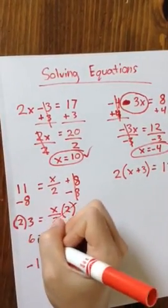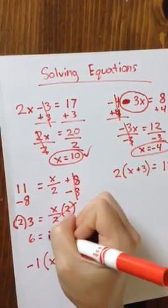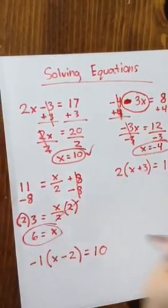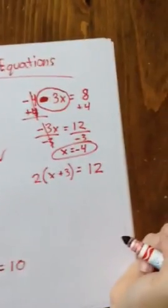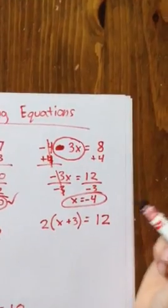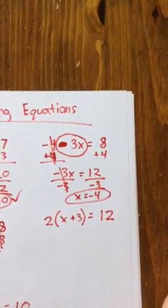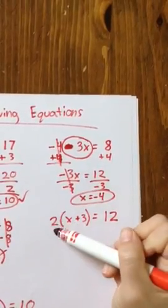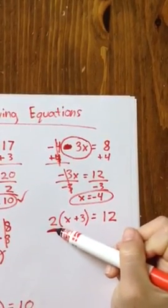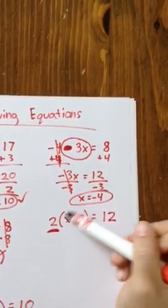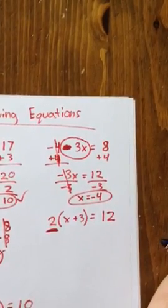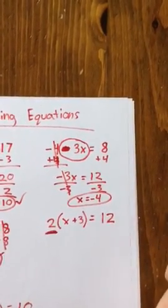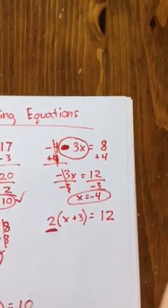Now here I want to do an example with the distributive property because I know this confused a lot of us. The distributive property is where we distribute whatever term is here to both parts inside the parentheses. And this allows us to simplify equations we otherwise could not simplify.